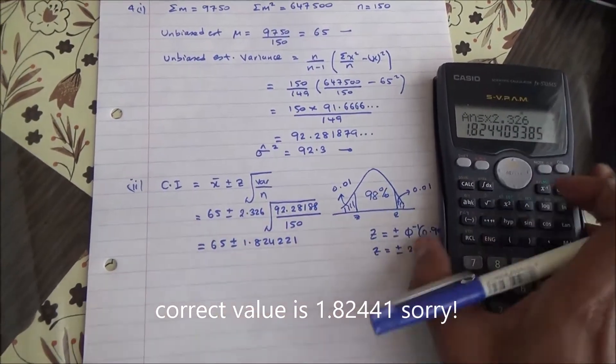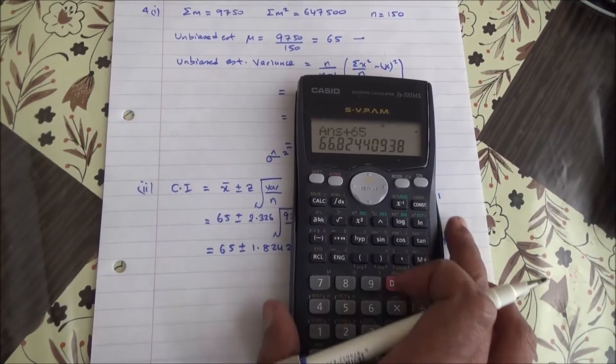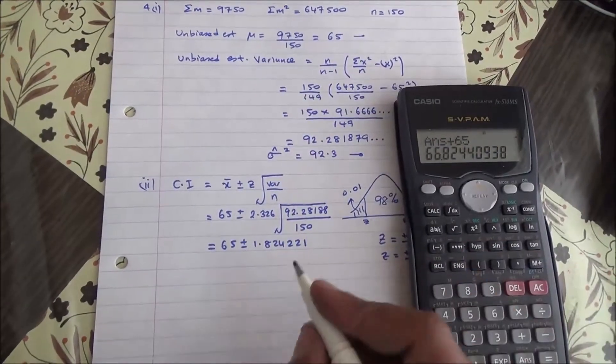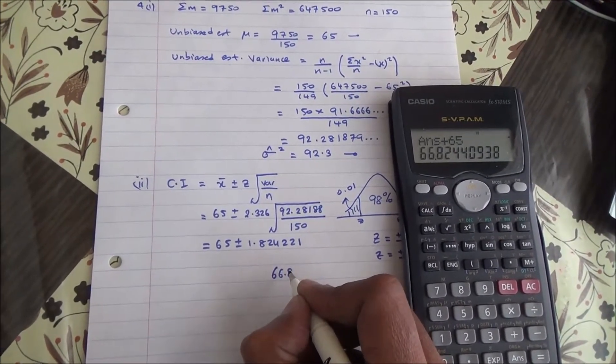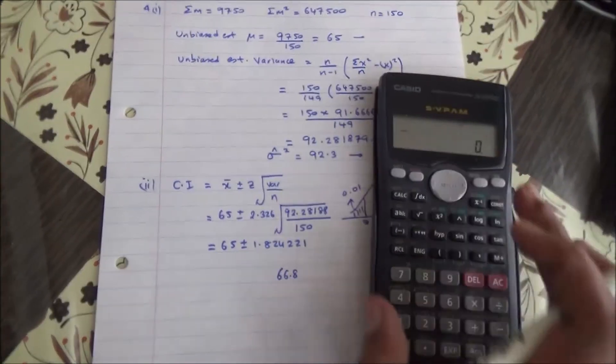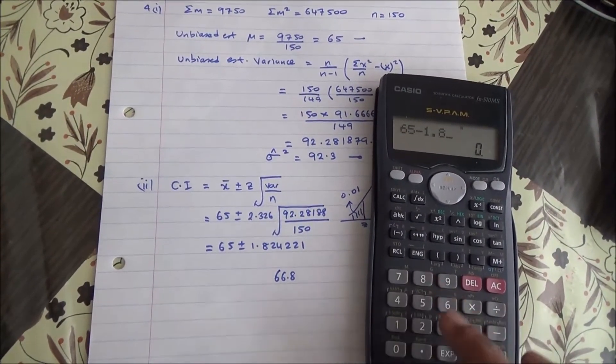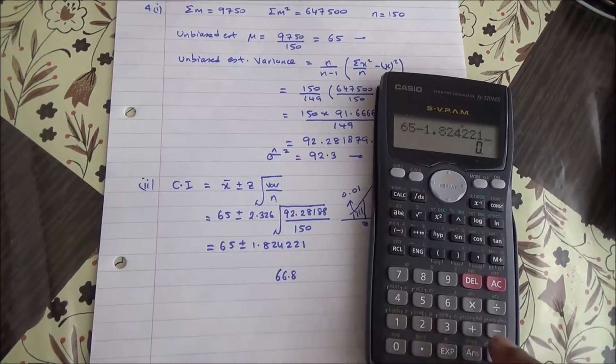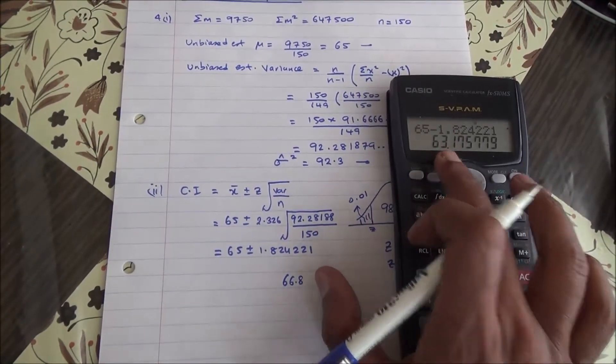If you add 65 to this, it's going to be 66.8. So we have 66.8 would be the upper limit, and the lower limit is going to be 65 minus 1.82421, which is 63.2.